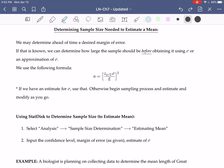We can use that desired margin of error to determine the sample size, conduct a sampling process using that sample size, and then go through and get that confidence interval. In this process, we're just determining the sample size though. We may determine ahead of time a desired margin of error. If that is known, we can decide how large the sample is before we actually obtain it.